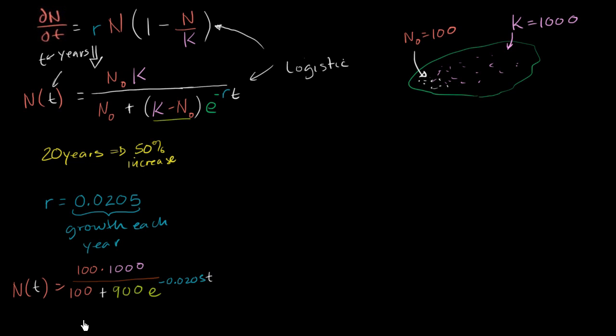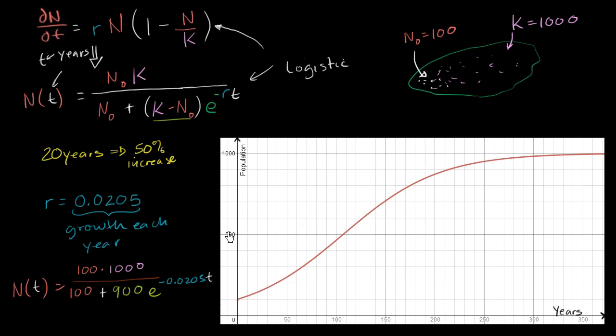To verify that this actually does describe population in a way that we thought the logistic differential equation would, let's plot it. So I made a plot and we see the behavior that we wanted. The population at year zero is starting at 100, and after 20 years our population looks like it's almost grown to 150.